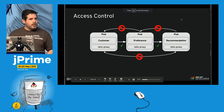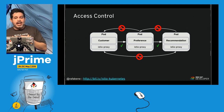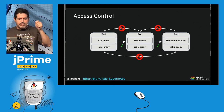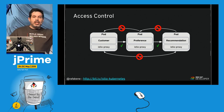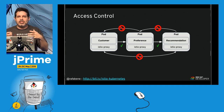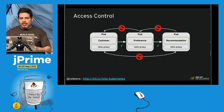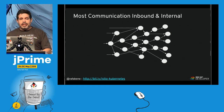Istio also provides access control. For example, with my Customer, Preference, and Recommendation services, I can write rules that allow Customer to access Preference and Recommendation, but block Recommendation from accessing Customer or Preference, and block Preference from accessing Customer. This gives you security controls on your microservice communication.